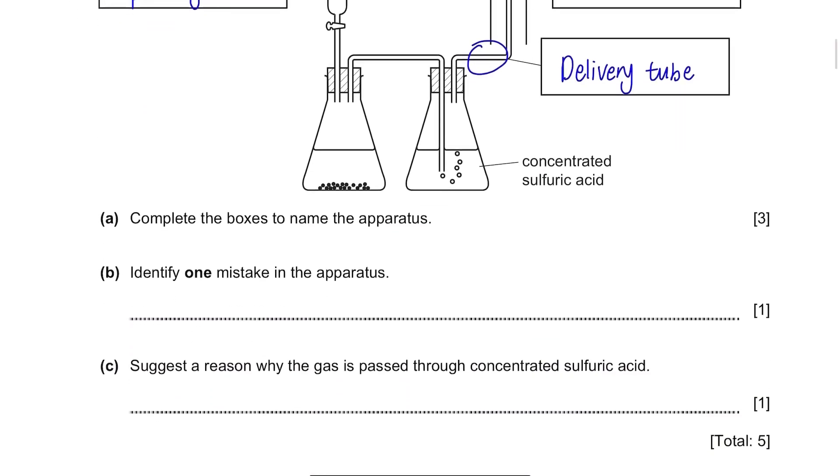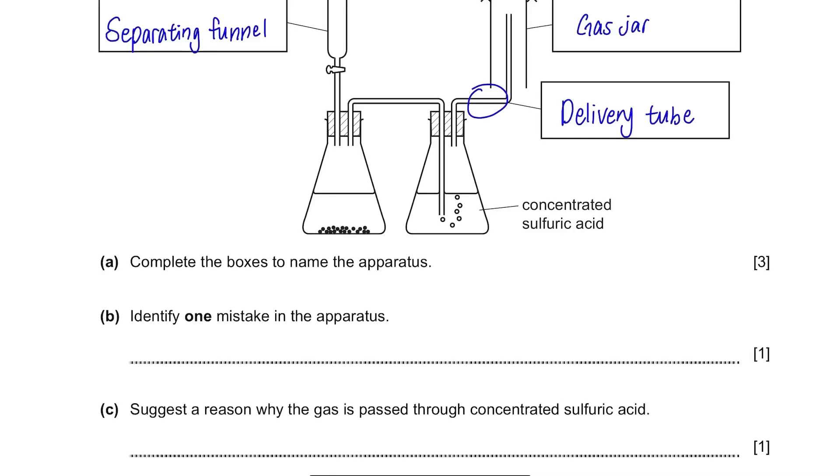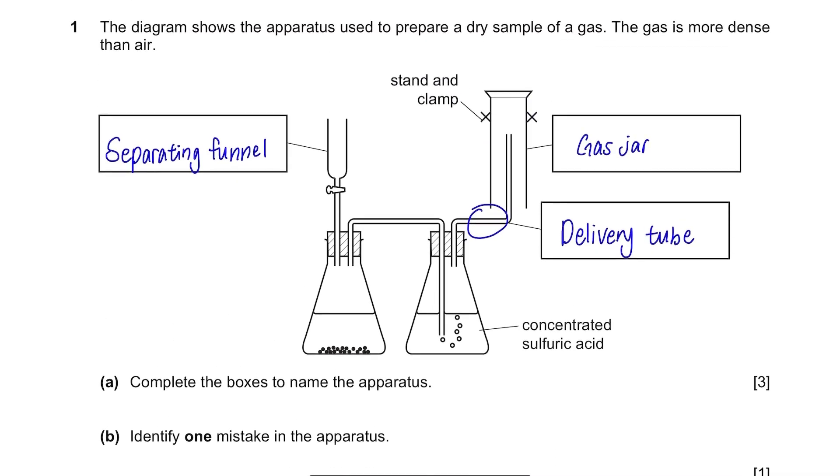Part B. Identify one mistake in the apparatus. Going back to the main question, it says the gas is more dense than air. This means that the gas collected will sort of sink when released in air. So the gas jar should be upside down so that the gas can be collected downwards.